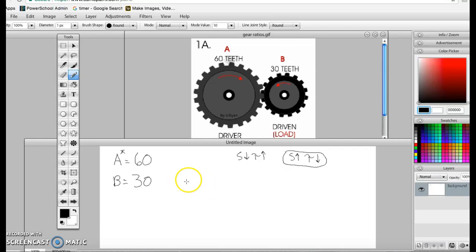Let's first calculate the gear ratio. Gear ratio is the drive over driven. So drive is A over B driven. 60 over 30.